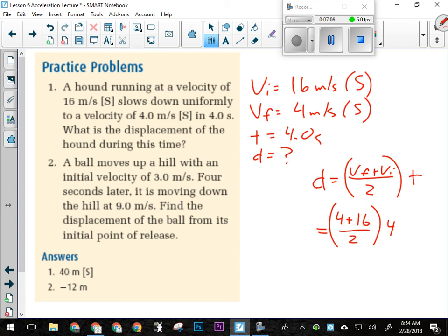It's exactly the same as the example we just did. D equals VF plus VI over 2 times T. We don't have to manipulate because it's already set up to solve for D. All we have to do is plug in our numbers. 4 plus 16 over 2 times 4 seconds. So 4 plus 16 is 20 divided by 2 is 10 times 4 is 40 meters south.